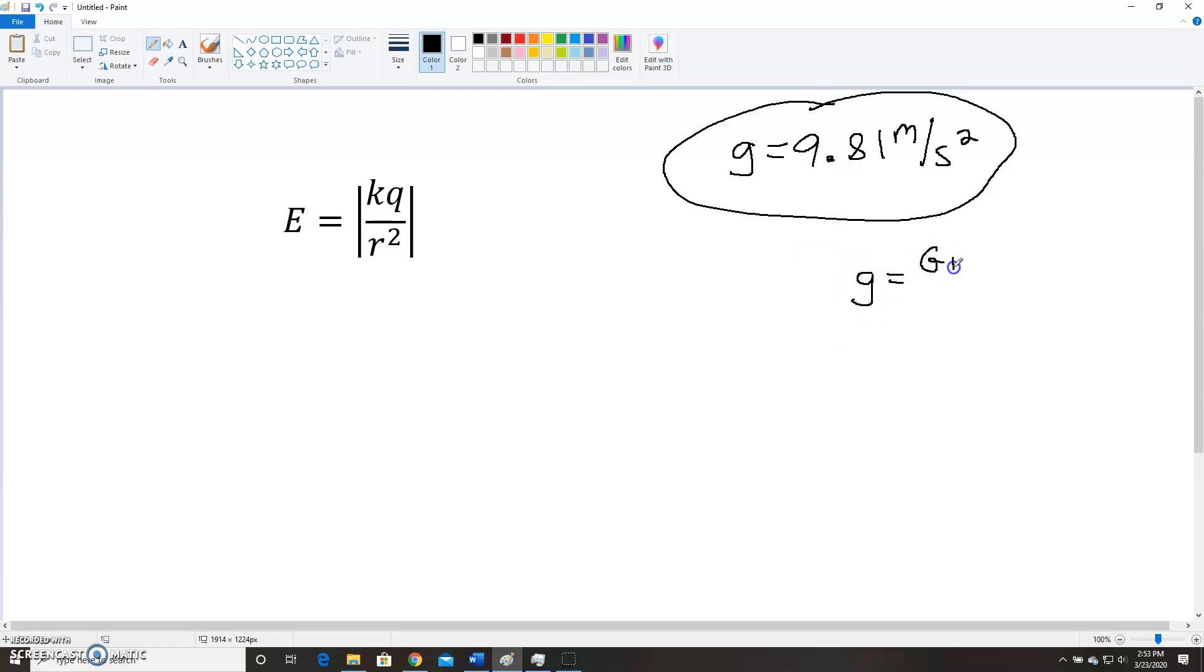Just like if you remember in gravitation and orbits, we talked about this equation here, which tells me what's the gravitational field on another planet. Now we can see it's very similar in the electrical world. So we have E, which this will tell us our field strength. And the field strength is measured in newtons per coulomb.